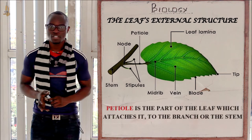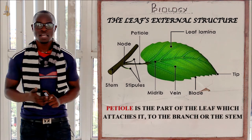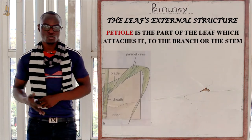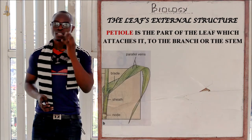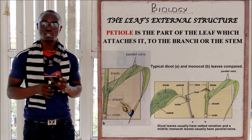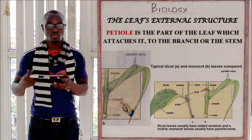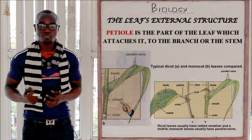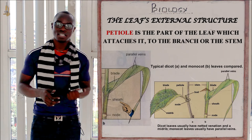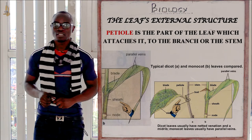Lastly among the external structures, let's look at the petiole. This is the part of the leaf that attaches the leaf to the stem or the branch. In monocotyledonous plants we don't have a petiole — instead we have a sheath. In dicot plants we have a petiole.